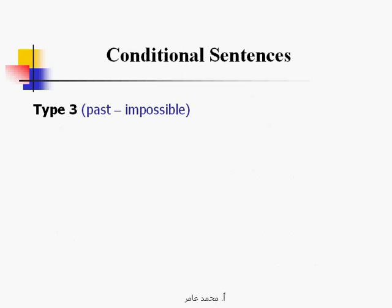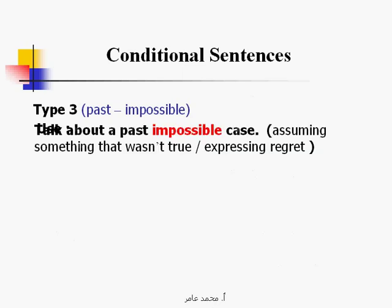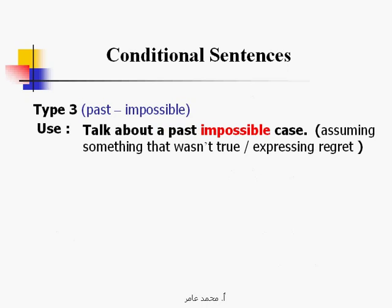Conditional sentences type 3 — past impossible. We use type 3 to talk about a past impossible case, assuming something that wasn't true, expressing regret.